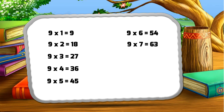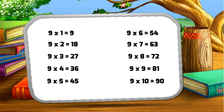Nine seven za sixty-three, nine eight za seventy-two, nine nine za eighty-one, nine ten za ninety.